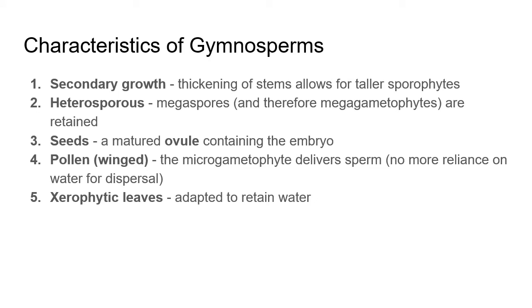Here's a review — heterosporous. This was something that I left off. So heterosporous: we have megaspores, and those megaspores are retained. We saw the heterosporous condition in Selaginella, and that was the first time we saw it. And then it disappeared — it just sort of evolved within Selaginella and then convergently evolved within all of the gymnosperms and angiosperms. So all of our seed plants are going to have megaspores and microspores, and those megaspores are going to be retained.